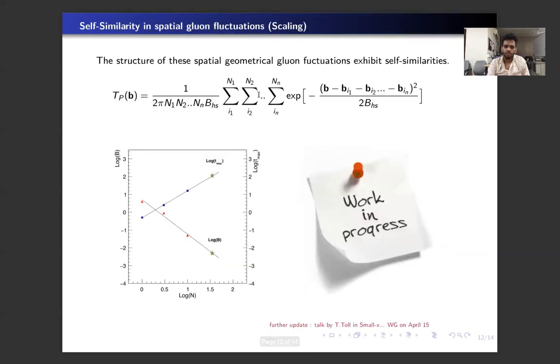We have also explored the scaling behavior of these gluon fluctuations where the profile of the proton consists of further hotspots within hotspots within hotspots. To predict the width and the number of these hotspots, we fit the width and the number of hotspots for the first three generations of these hotspots, and we see that these fall on a line and we can extrapolate this line to predict the number and the width of these hotspots.